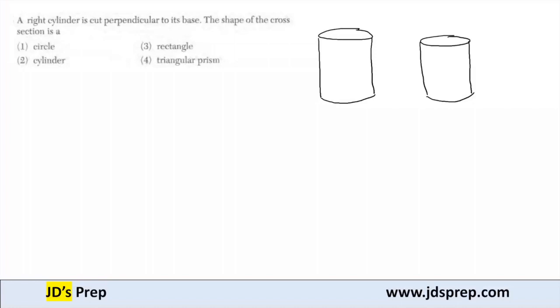Hello, welcome to JD's Prep. In this example, a right cylinder is cut perpendicular to its base. The shape of the cross section is what shape?